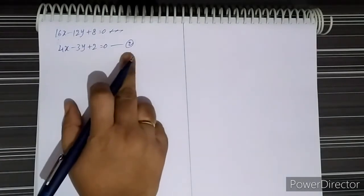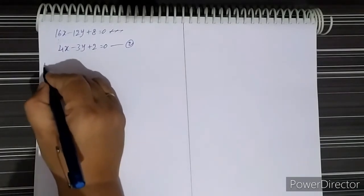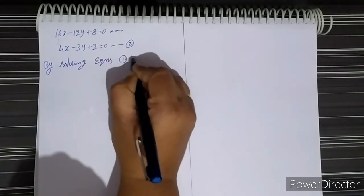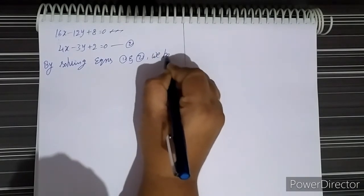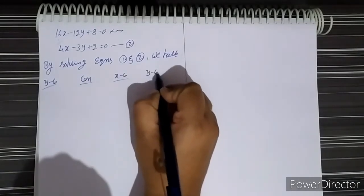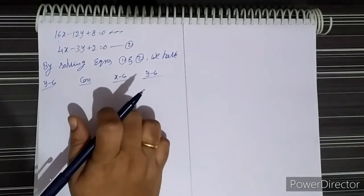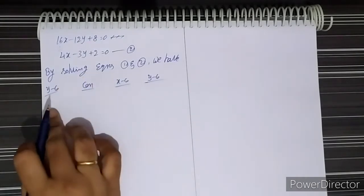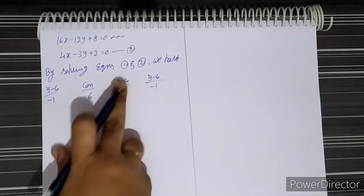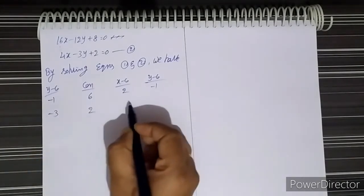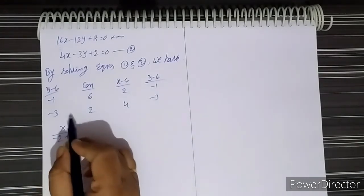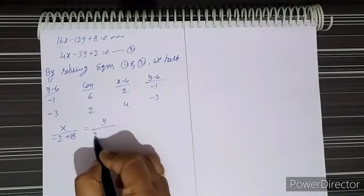By solving Equations 1 and 2 we can get the circumcenter. Using the cross-multiplication method: from Equation 1, the y coefficient is -1, constant is 6, x coefficient is 2; from Equation 2, the y coefficient is -3, constant is 2, x coefficient is 4.